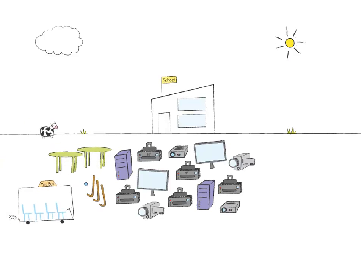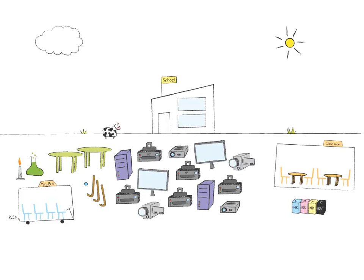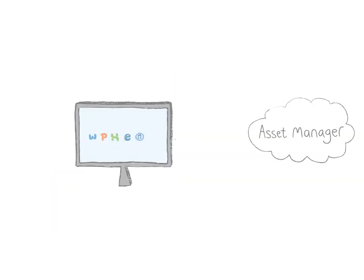Sports equipment, minibuses, furniture, science kit, consumables, even rooms and human resources such as maintenance staff — they're assets too. So you've got your assets recorded, which was a lot easier than you thought it was going to be. Now you can start to appreciate the everyday benefits and begin to improve efficiency and reduce costs.